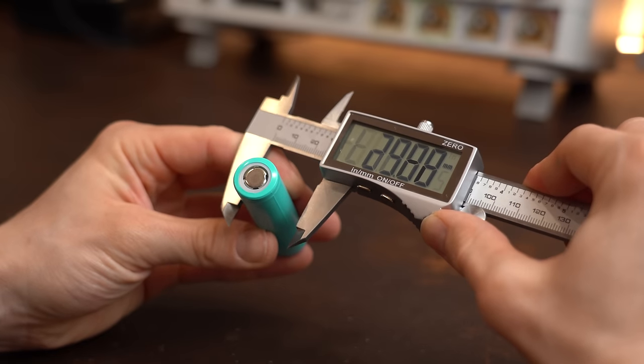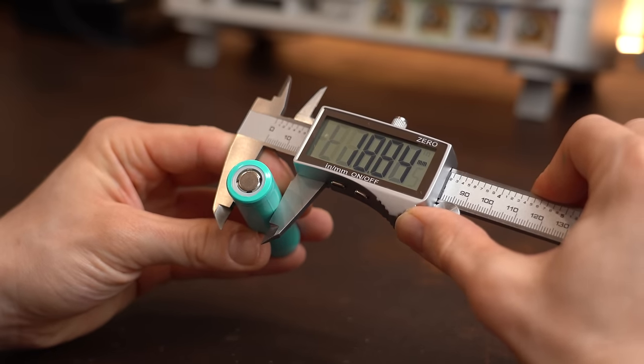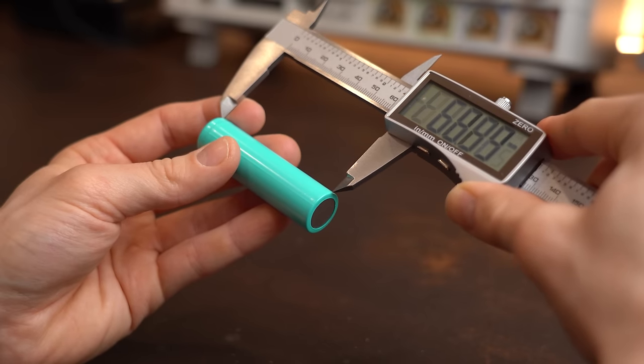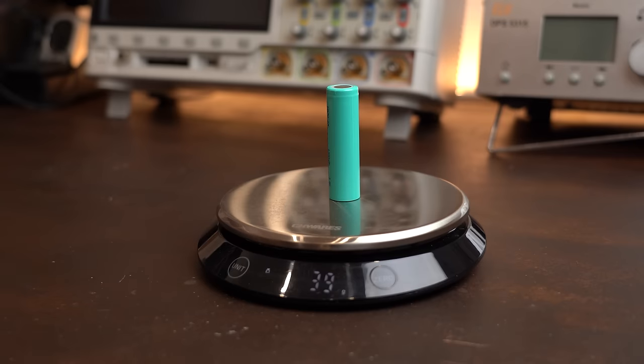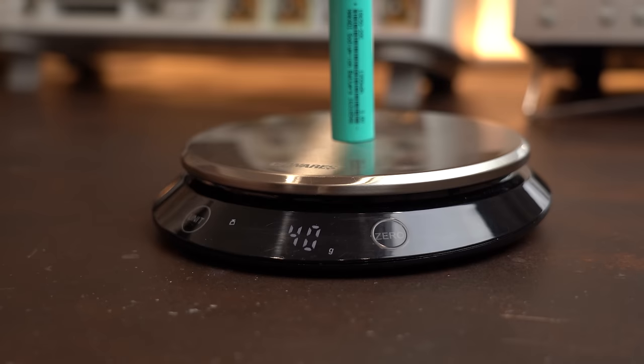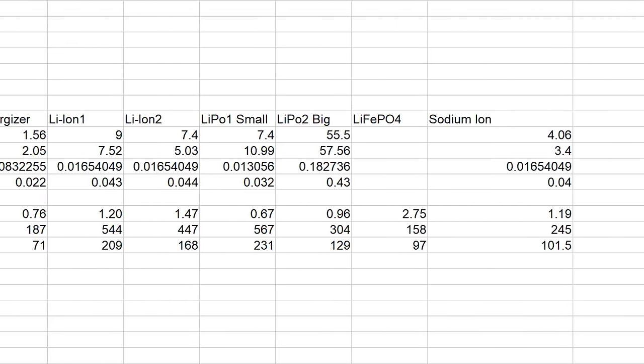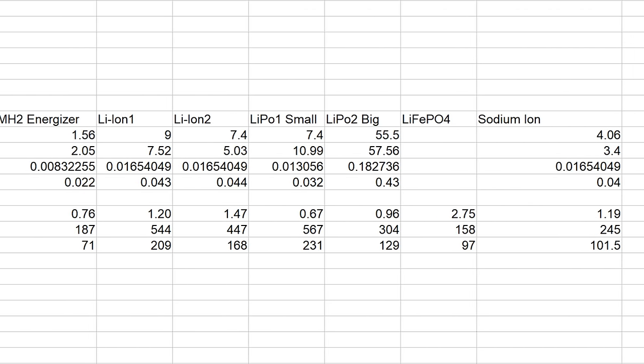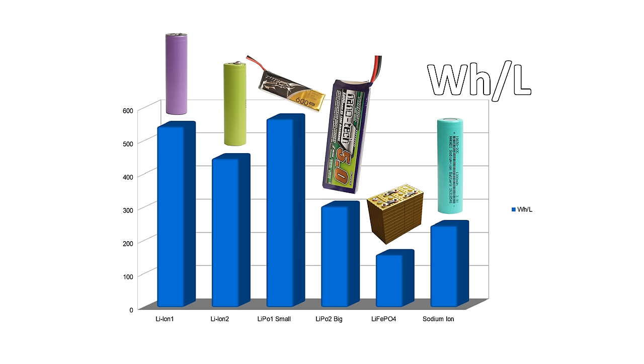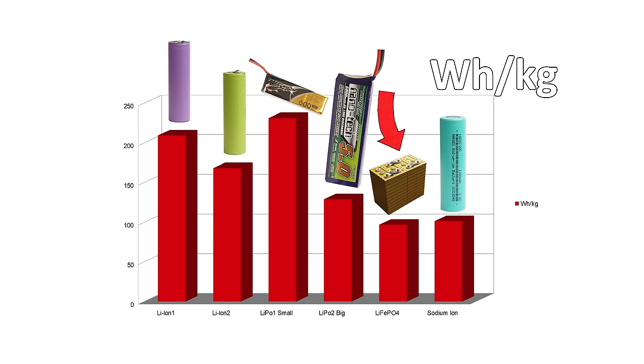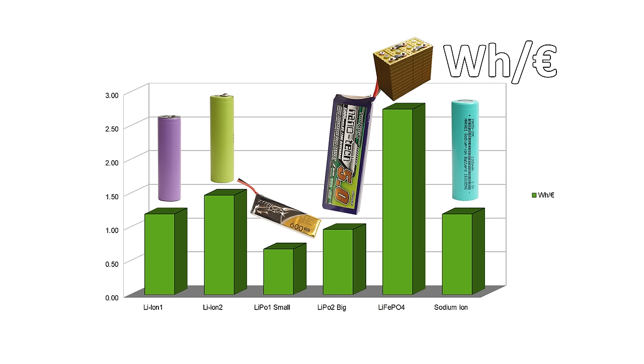And that directly brings me to the energy density comparison for which I checked the volume, weight and price of one sodium ion cell and added those information to my battery comparison chart. And as you can see sodium ion can only barely rival lithium iron phosphate when it comes to energy density while being quite a bit more expensive.